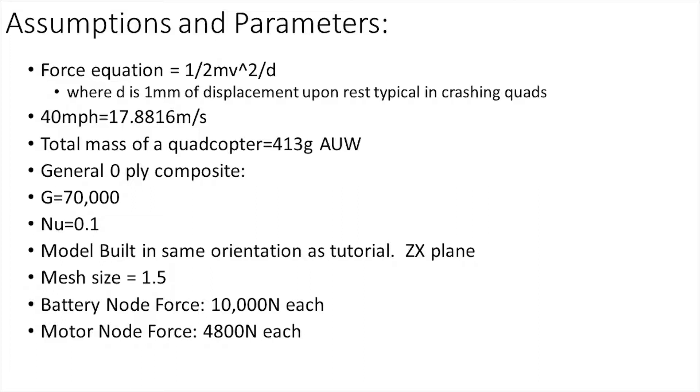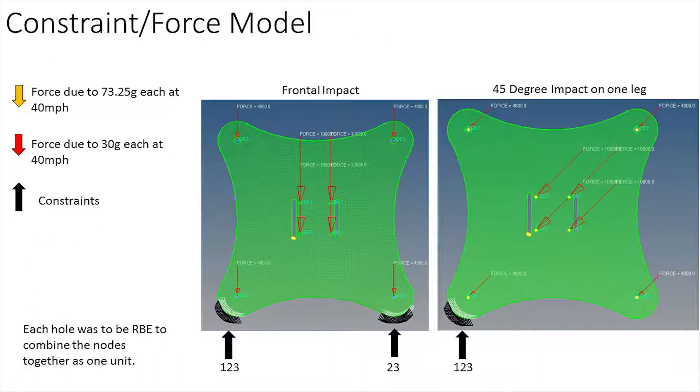This is my constraint force model. As you can see I simplified the design a little bit to mimic more of a drone frame design. The motor nodes are the 4 outer holes of the part whereas the 4 inner ones are the battery nodes, and below you can see the constraint DOFs 1, 2, and 3 on the left and then 2 and 3 on the right.